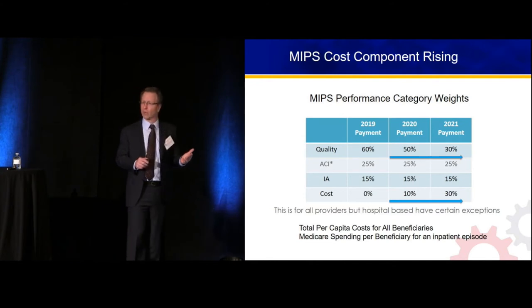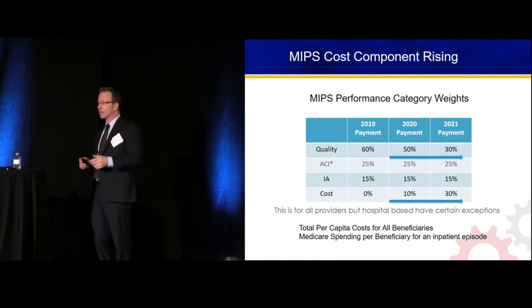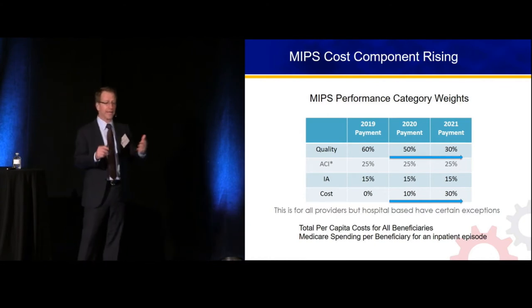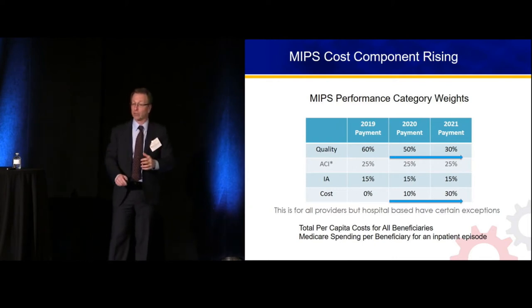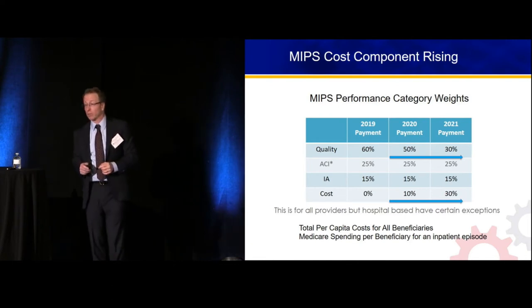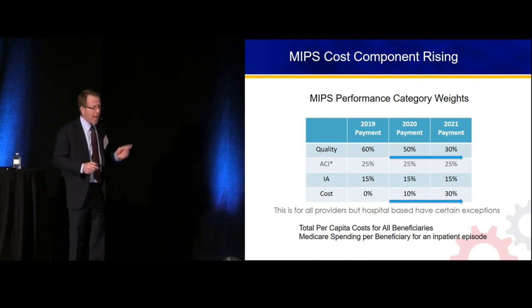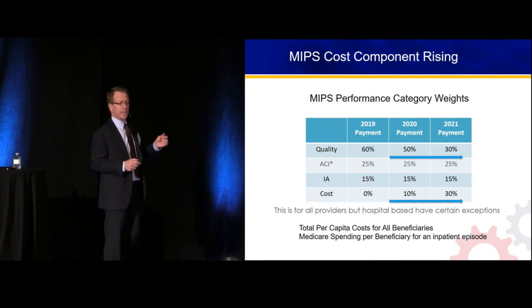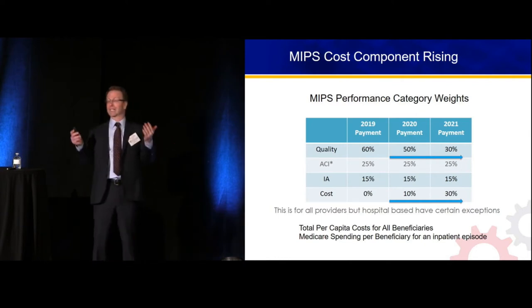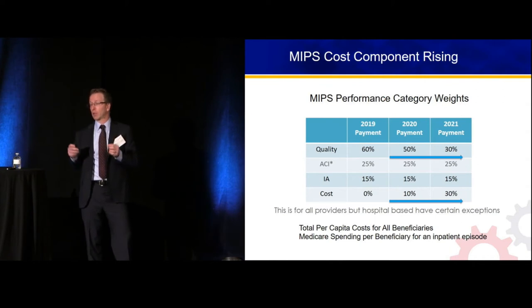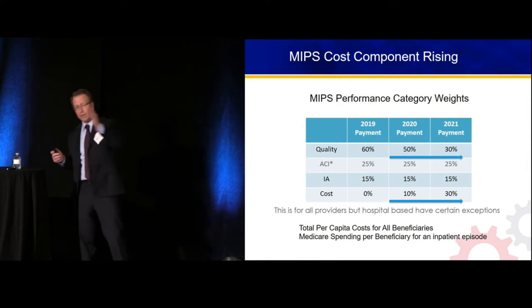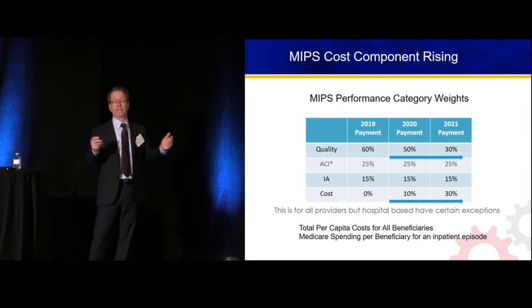They have two really junky measures for emergency medicine. Total per capita cost — so what's my average cost to take care of a Medicare beneficiary — doesn't really relate to all my ED stuff; it relates to all of that patient's Medicare expenses in Part B allowables. So a little disconnect for emergency medicine.